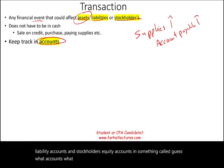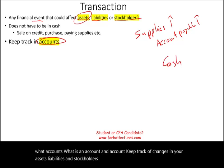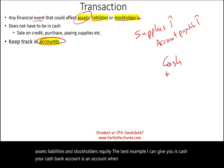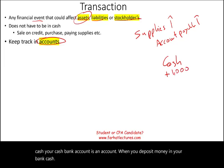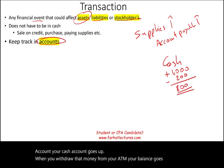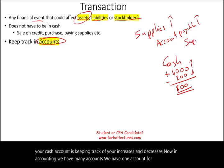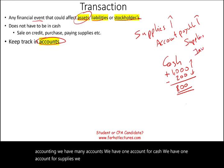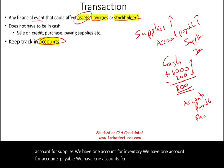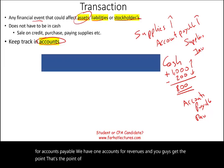What is an account? An account keeps track of changes in your assets, liabilities, and stockholders' equity. The best example is cash — your cash bank account is an account. When you deposit money, your cash account goes up; when you withdraw from an ATM, your balance goes down. In accounting we have one account for cash, one for supplies, one for inventory, one for accounts payable, one for revenues, and so on.